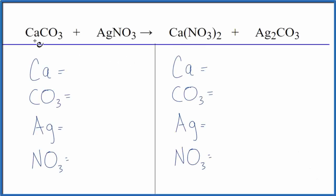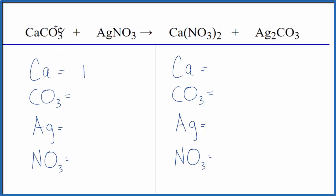In this video, we'll balance the equation CaCO3 plus AgNO3, that's calcium carbonate plus silver nitrate. Let's add the atoms up on both sides of the equation. We have one calcium, and then CO3, that's called the carbonate ion — it's a polyatomic ion. It's right here, and we see it again on the other side. We can just call this one item; that'll make the balancing a lot easier.